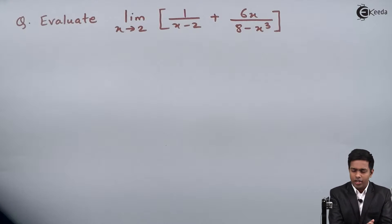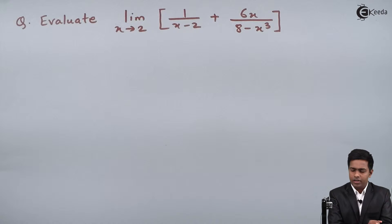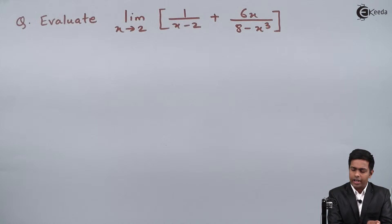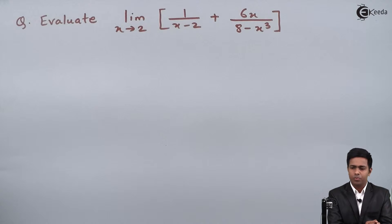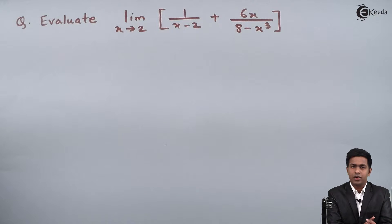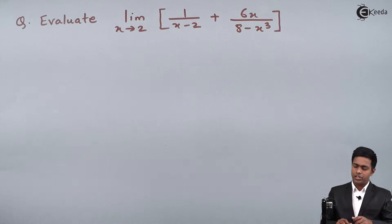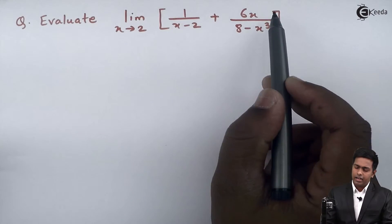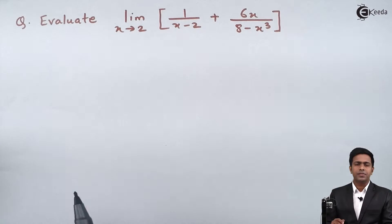Hello everyone. In this problem we have to evaluate the limit as x tends to 2 of 1/(x−2) + 6x/(8−x³). Before starting the solution, if you observe the given function, it is an algebraic function.